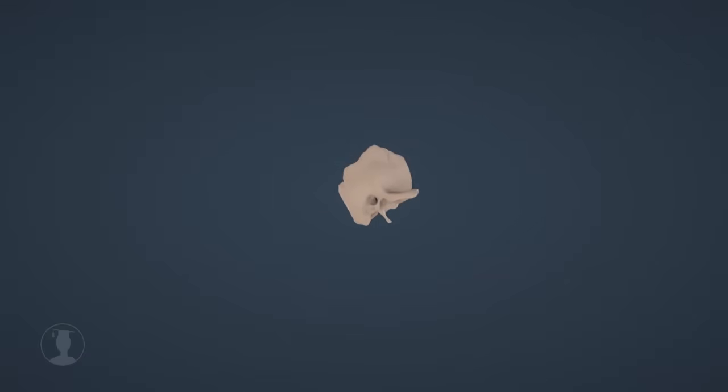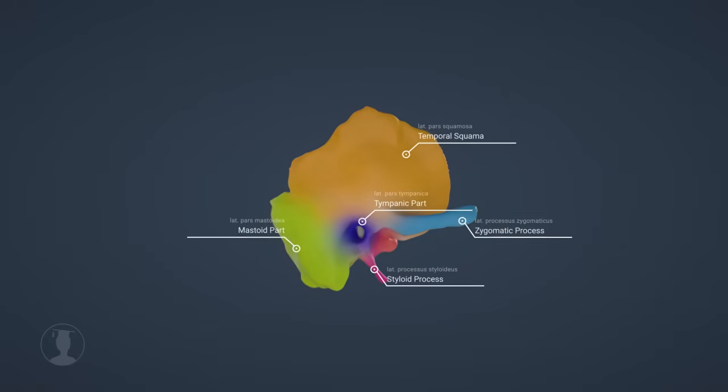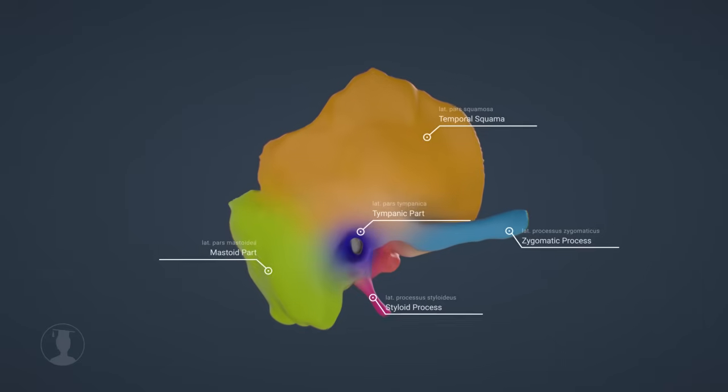As already mentioned, certain parts of the ear are protected by the temporal bone. The temporal bone has different areas, such as the tympanic part, which protects the external auditory canal and the middle ear.